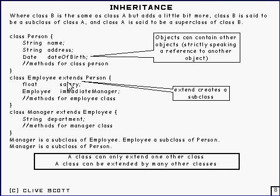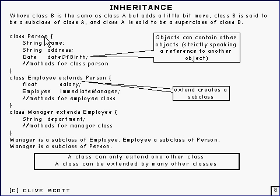You have another class called Employee which is just like Person — they've got name, address, and date of birth — but it has a few more things in it as well, like the salary and the immediate manager. This is what's called a subclass. Employee will be a subclass of Person, and what that means is Employee has got everything that Person has got plus these extra bits.